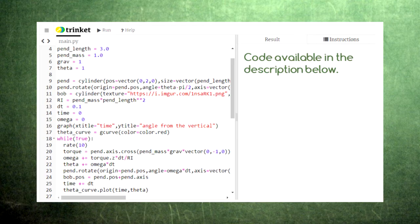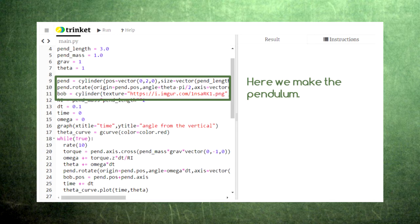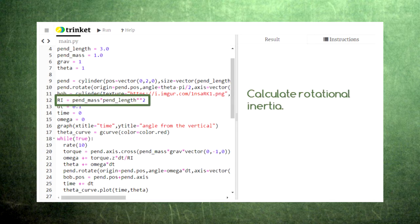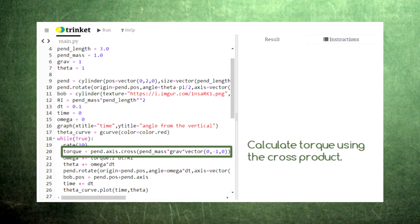In this code, we create a pendulum using a rod and a disk. The rotational inertia of the pendulum is just the pendulum's mass times its length squared. The torque exerted on the pendulum is the cross product of the pendulum's arm with the force of gravity.